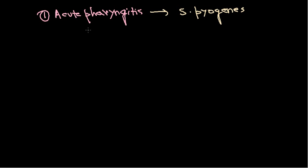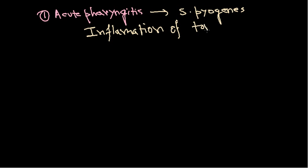In acute pharyngitis, there is simply the inflammation of the posterior oropharynx, specifically the tonsillar area. It also involves development of a rash on the neck, trunk, and extremities in response to the release of pyrogenic exotoxins. This is a very painful situation because when a person catches this infection, eating food is literally halted.